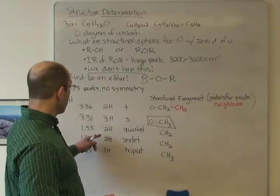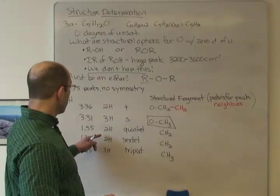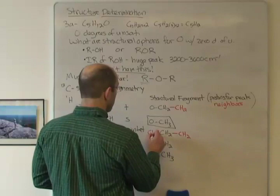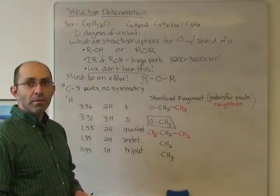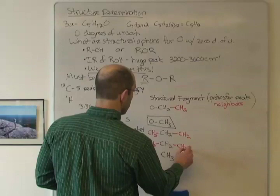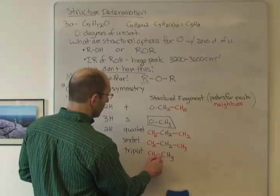If we look at this next peak, which is a 2H quintet. Quintet split into five lines. It has two neighbors, so it has a CH2. It has four neighbors, CH2 on either side. Four neighbors split into five lines. The sextet has five neighbors split into six lines, so CH2 on one side, CH3 on the other. And the CH3, that's a triplet, has two neighbors.